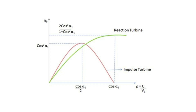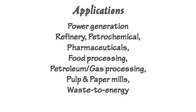On the other hand, reaction turbines are usually more efficient because they have higher isentropic turbine efficiency. Steam turbines are widely used in both power generation and process industries. Both impulse and reaction turbines are used in all types of applications, but when compared with the reaction turbine, impulse types are most widely used.